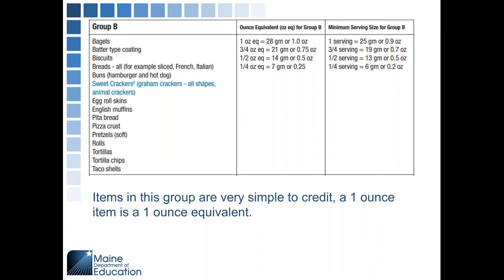The second group, which is probably the most common you'll see, is Group B. Any item in this group credits ounce for ounce, so one ounce of an item is a one ounce equivalent. This includes bagels, breads, hot dog buns, burger buns, biscuits, pizza crust, soft pretzels, rolls, taco shells, and tortilla chips. These are the most commonly used products in child nutrition programs.